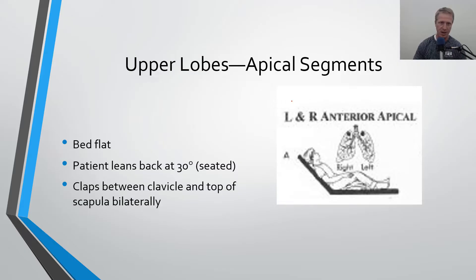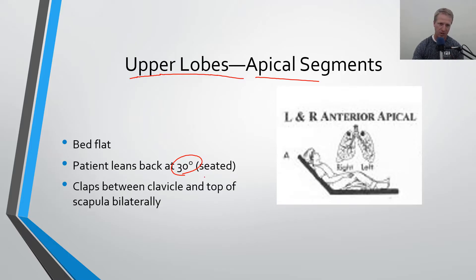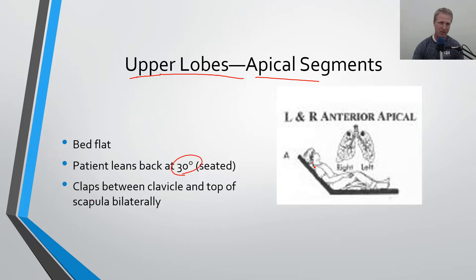First off we're going to start with the upper lobes, the apical segments, which are up at the apex of the lungs. The biggest thing here is that the patient is in a seated position leaning back about 30 degrees. You're going to be clapping between the clavicle and the top of the scapula on the rear side, basically hitting those apical segments. You can treat bilateral — both right and left — in this position.